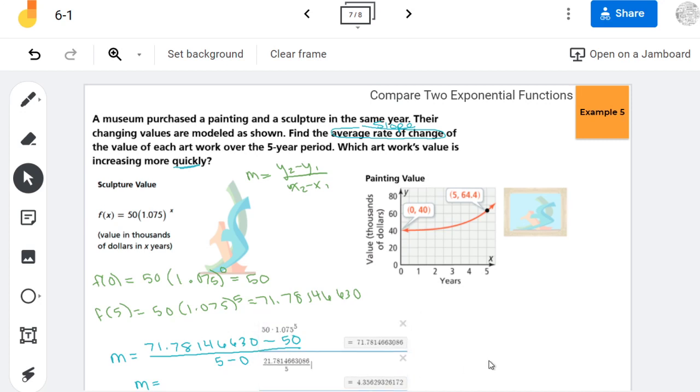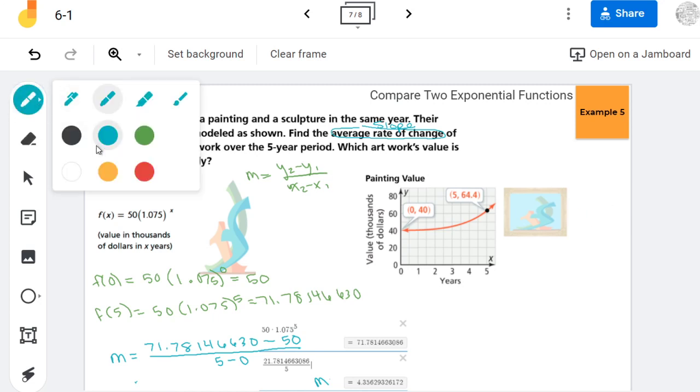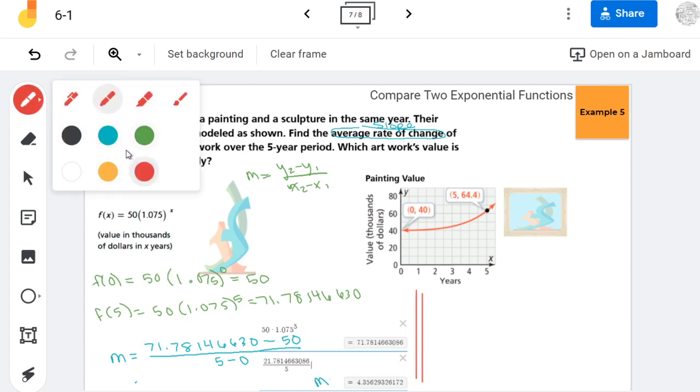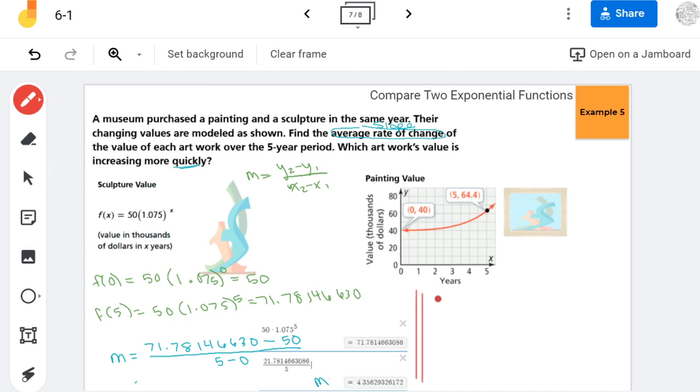Now let's go over here to the painting. So here, our slope formula goes a lot quicker because we don't have to calculate f of 0 and f of 5. So I'm going to start by subtracting the y values, and in the same order, I'm subtracting the x values. So I'm going to be doing 24.4 divided by 5.